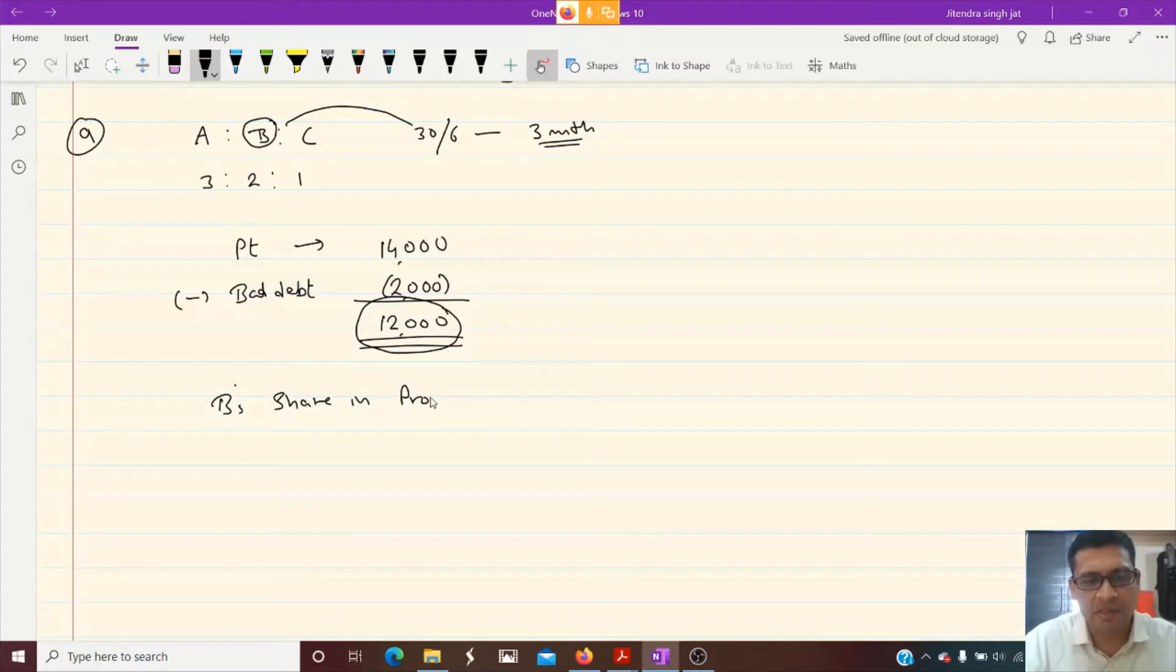It is very simple to calculate B's share in profit. So in this 12,000 what is B's share? B's share is 2 by 6. But this is the profit of whole year and B died after 3 months. So we need to give only 3 month profit to B. So we will divide by 3 by 12.